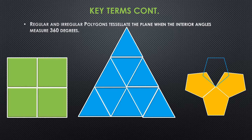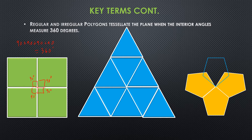Let's look at how these things go together — regular and irregular polygons tessellating the plane. That happens as long as the interior angles measure 360 degrees. With squares, we know they have right angles — 90 degrees, 90 degrees, 90 degrees, and 90 degrees. If you take all those angles and add them together, 90 + 90 + 90 + 90 equals 360 degrees. So we know that tessellates perfectly because all those angles meet up to equal 360 degrees.